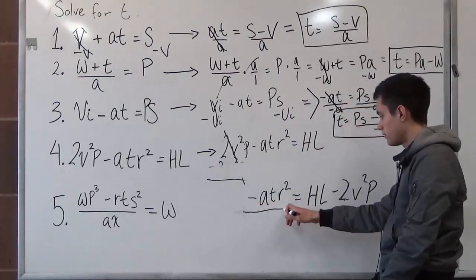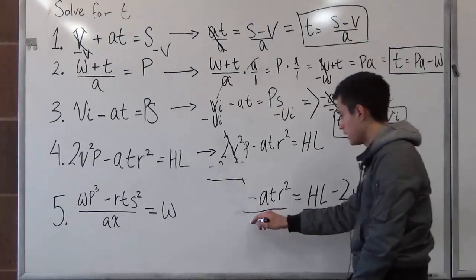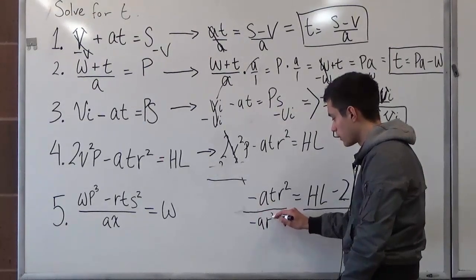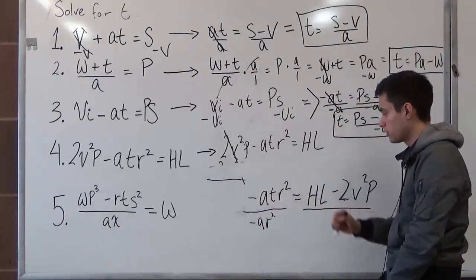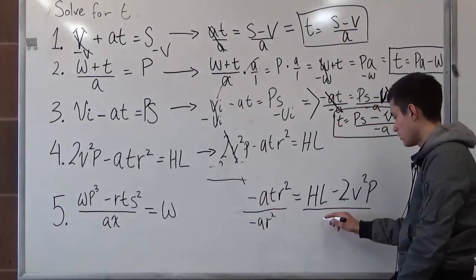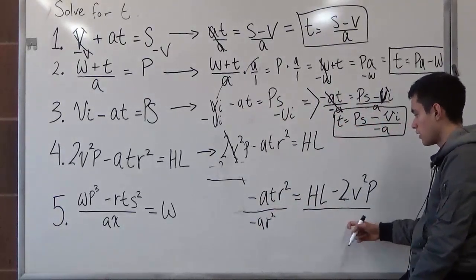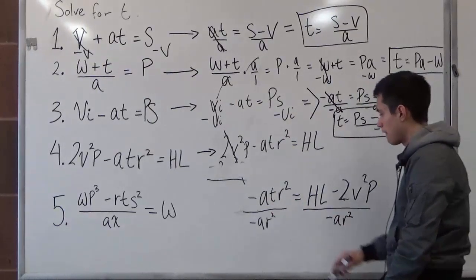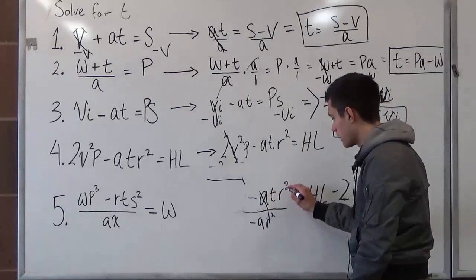So we're going to divide it, negative a times r squared. Because here it's being multiplied, so now you can divide it. And we apply this to the other side, negative ar squared. This cancels out.